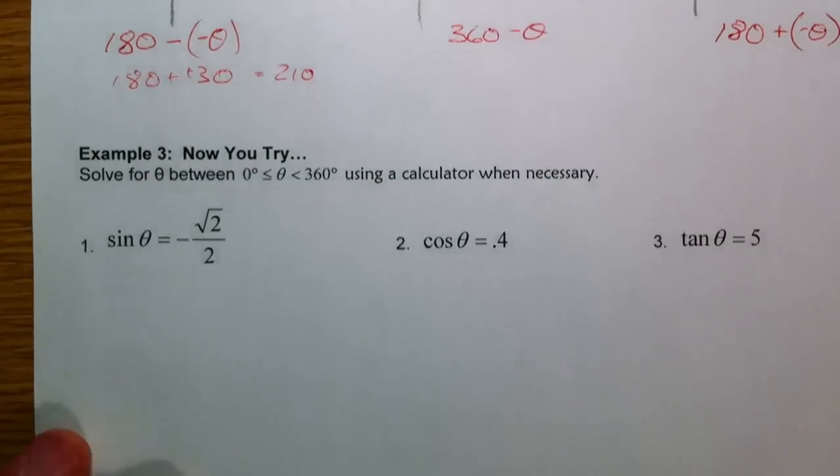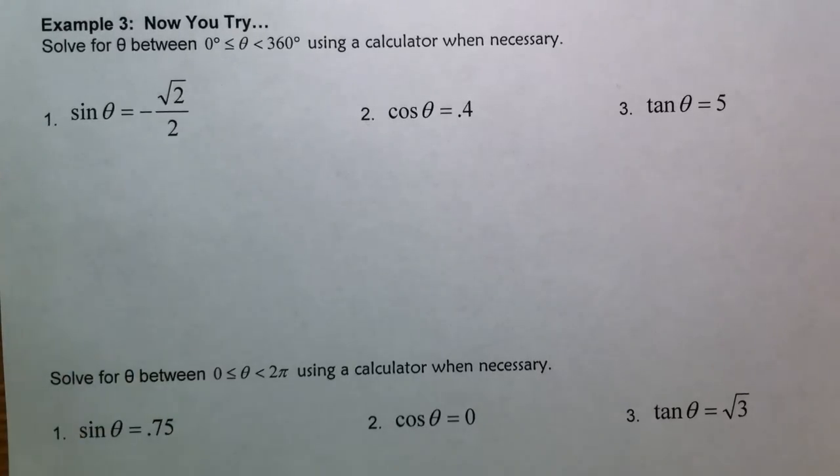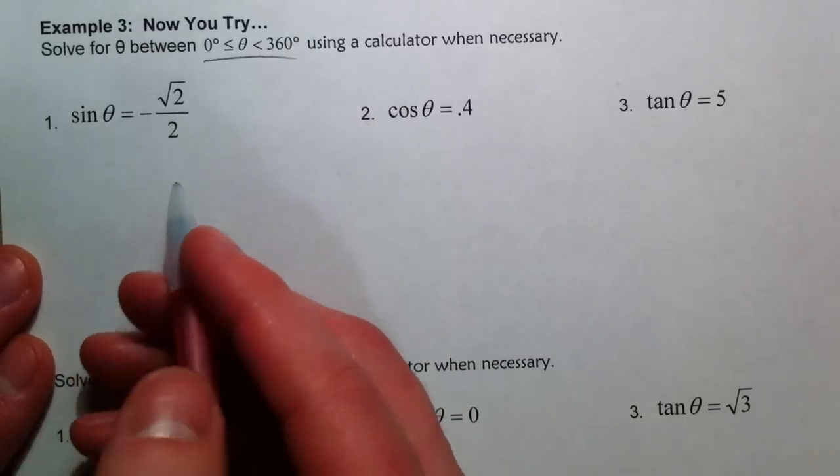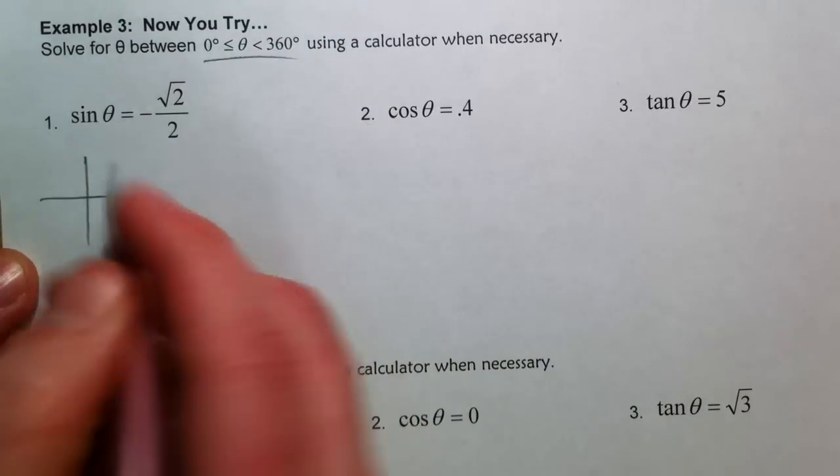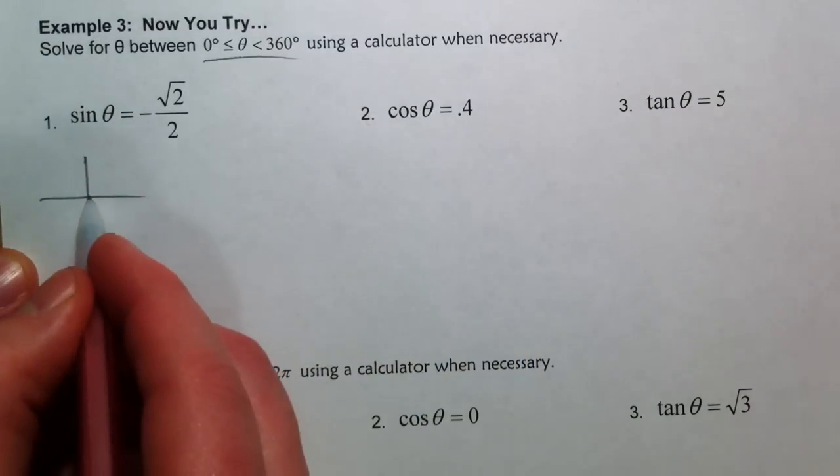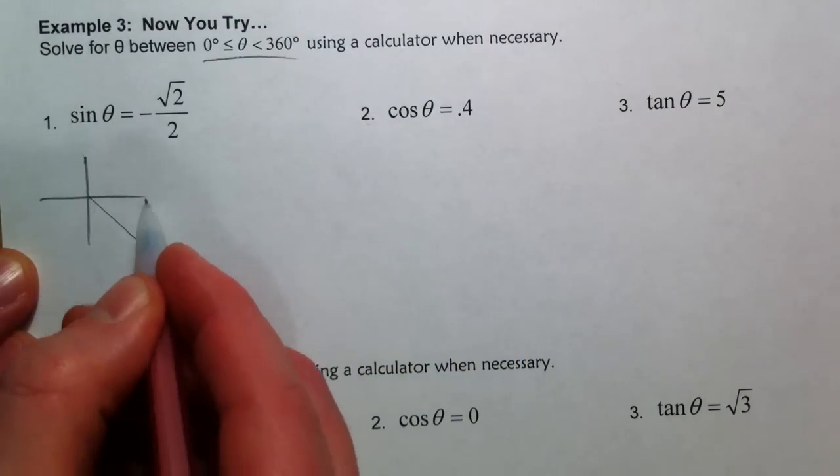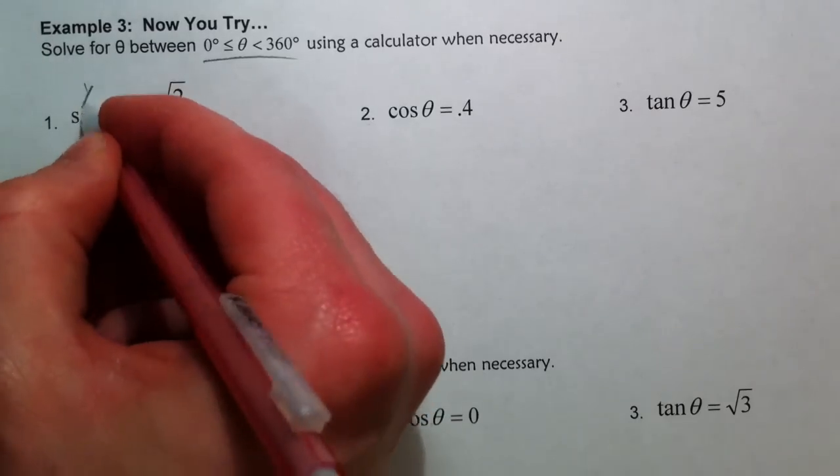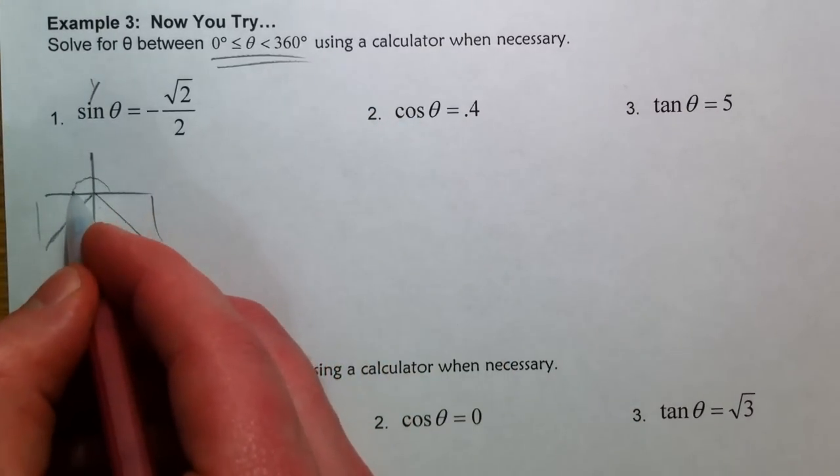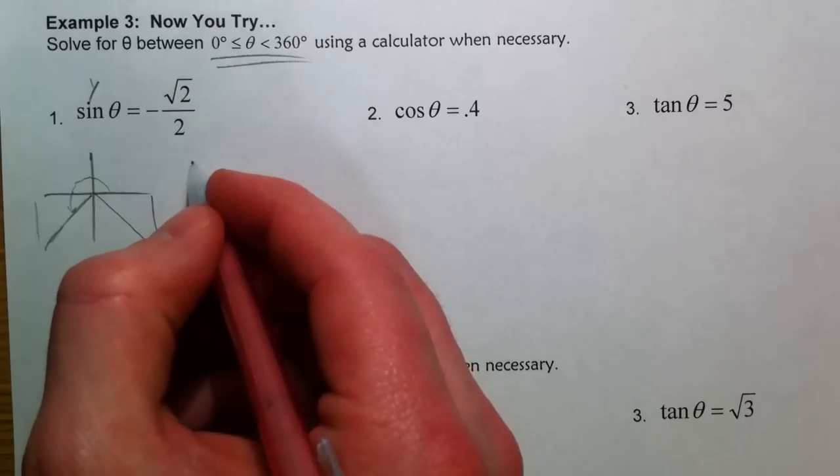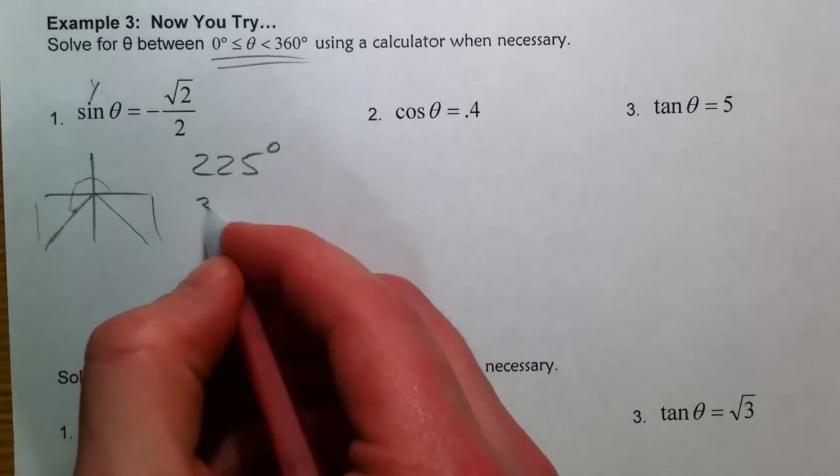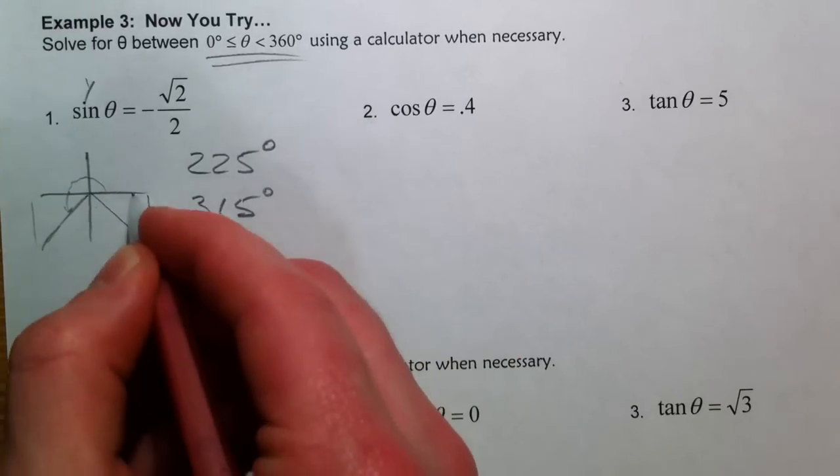So now we're going to go on and actually try this. So where is the sine value negative root 2 over 2? This is what we were doing before. Negative root 2 over 2. Where's the y value negative? And that's a 45 degree angle because it's the root 2 over 2. From 0 to 360, so that's 180 plus 45, so that's the 225, and then 315, 45 degrees less than 360.